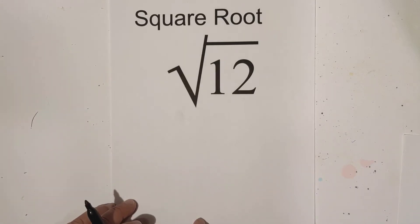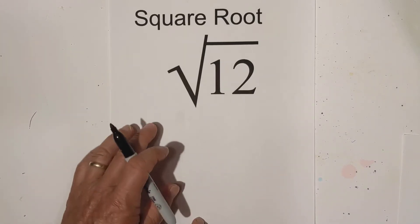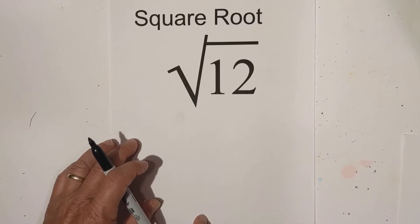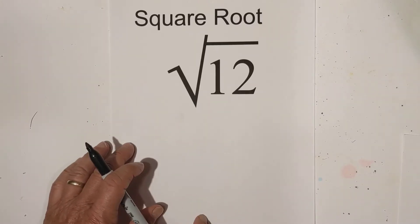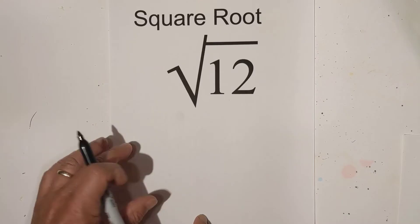Welcome to Moo Moo Math and Science. In this video let's talk about the square root of 12. It is not a perfect square. So what I'm going to do is I'm going to show it simplified, how you can estimate it, and then what it is to five places.